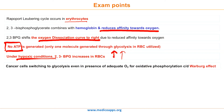Point 6: cancer cells switching to glycolysis even in the presence of adequate oxygen for oxidative phosphorylation is called the Warburg effect.